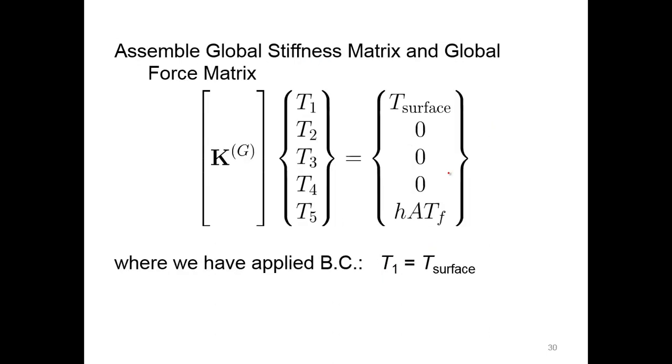We're going to assemble our global stiffness matrix, where we put all of our stiffness matrices together globally. We have all our temperatures here, and our boundary conditions say the temperature of the surface will be defined at node one.